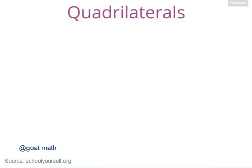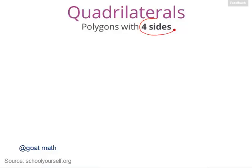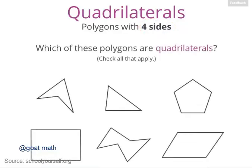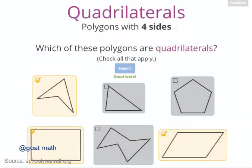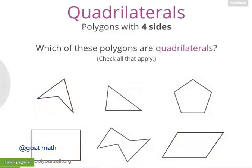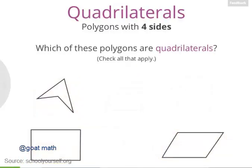Here we'll introduce you to a few different types of quadrilaterals. Quadrilateral is a fancy word for a polygon that has exactly four sides. Take a look at these polygons down here — which of these are quadrilaterals? These were the polygons that had exactly four sides, so these are the quadrilaterals.